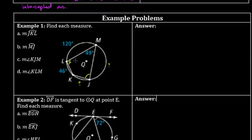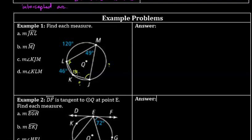Looking at this picture, it's an inscribed quadrilateral. Because of the inscribed angle theorem — an inscribed angle has a measure of half its intercepted arc — we can prove that opposite angles in any inscribed quadrilateral add up to 180 degrees. So this 49° angle and the angle opposite to it have to be supplementary, giving us 131 degrees for that opposite angle.